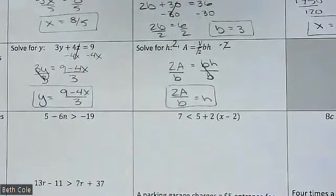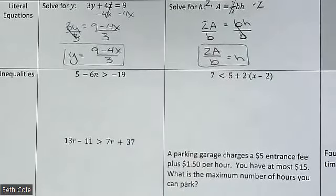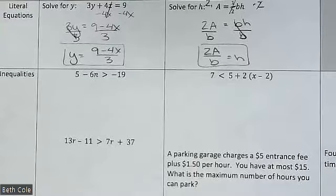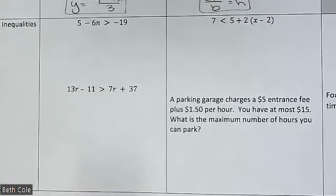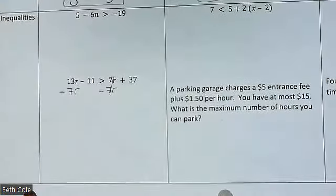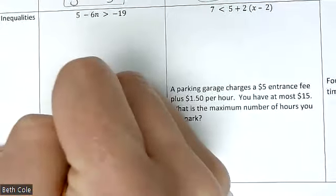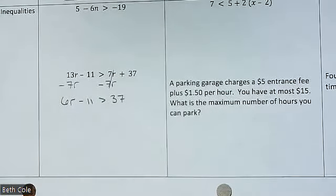I know those aren't super fun, but there's only two of them on the test. The last thing we did were inequalities — this is the exact same thing as an equation, except that if you divide by a negative, you flip the symbol around. For the sake of time, let's jump straight to this one. What would you do to both sides to get the r's all together? Minus 7r. So 13r minus 7r is 6r, minus 11, greater than 37.